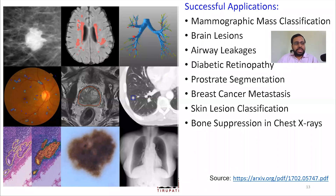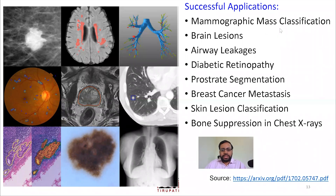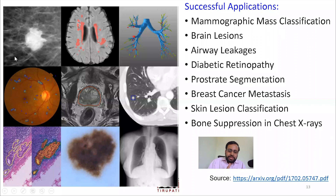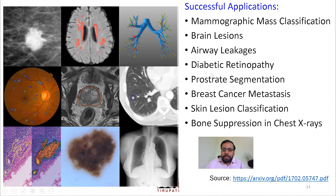Now let's look at some specific successful applications that have happened so far. These include mammographic mass classification, where results have improved quite a lot; brain lesion segmentation; airway segmentation; diabetic retinopathy; breast cancer and prostate segmentation; skin lesion classification; bone suppression; and chest X-rays. These are applications where the introduction of deep learning has given significant improvements in terms of accuracy, reliability, and other aspects.